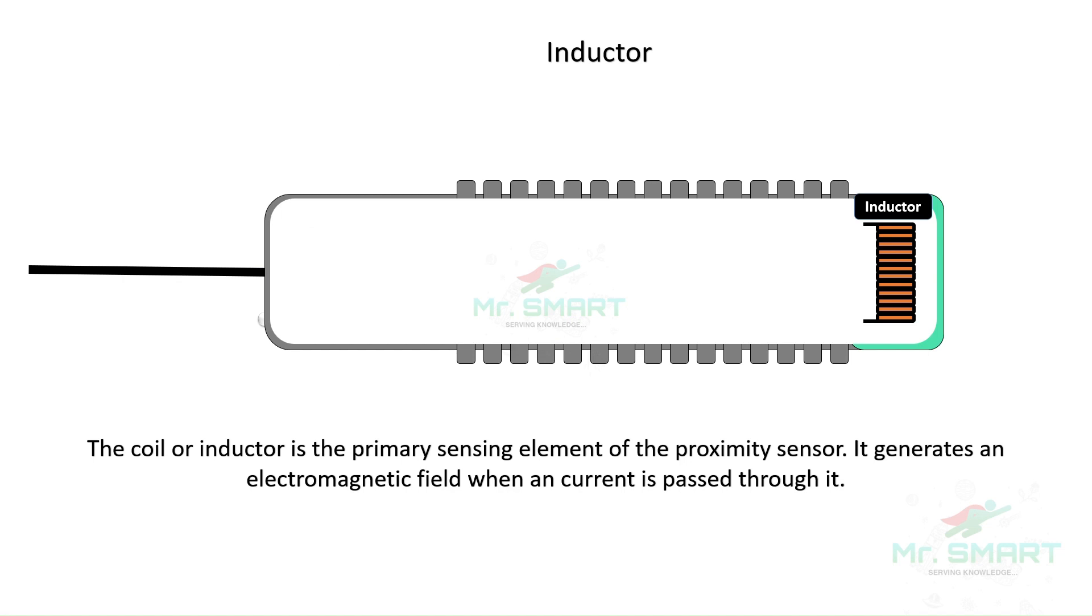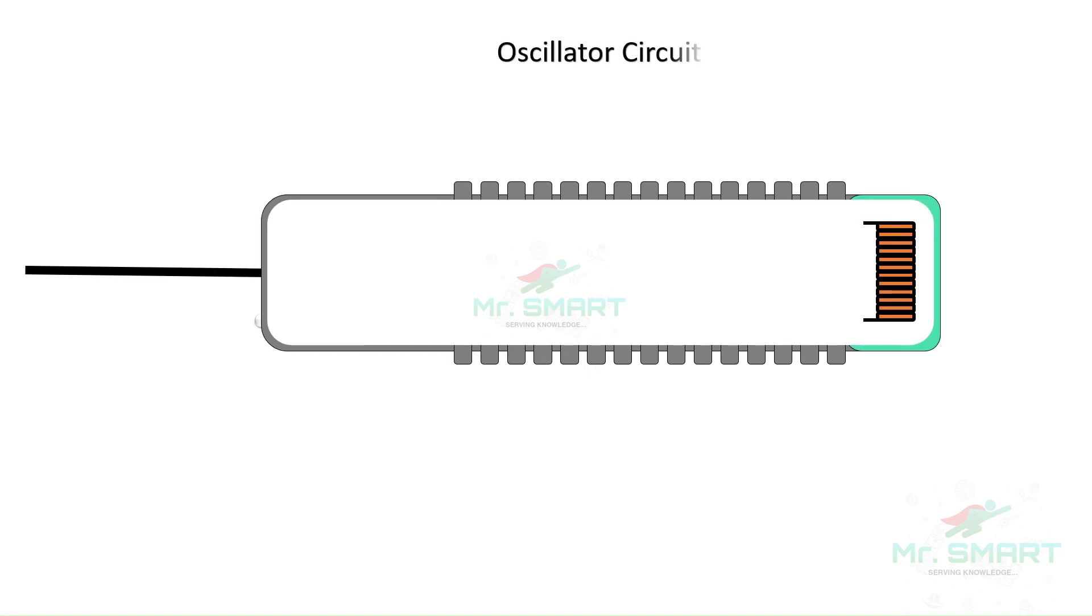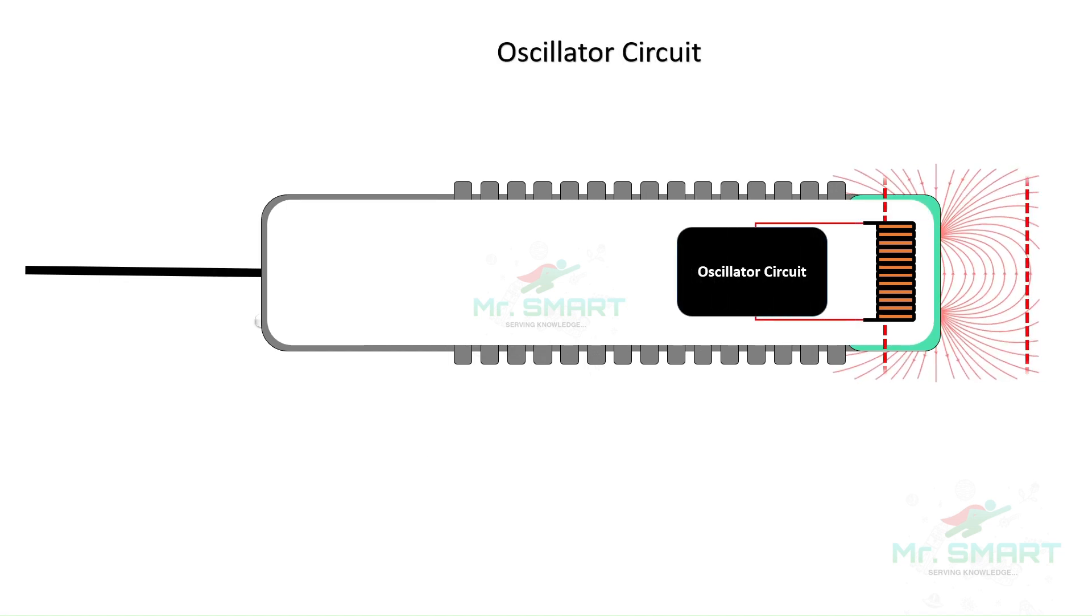It generates an electromagnetic field when current is passed through it. It is connected to a unit called an oscillator circuit. The oscillator circuit generates the current that powers the coil or inductor. When an electrical current is applied to the inductor, they create an electromagnetic field that extends outward from the sensor's active face and forms a sensing area.